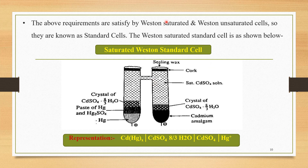The second important type of the standard cell is the Western unsaturated cell. If we compare the saturated Western standard cell with the Western unsaturated cell, both cells are exactly similar. The only difference is that in the Western unsaturated cell, there is an absence of crystals of cadmium sulphate (8/3 H₂O).